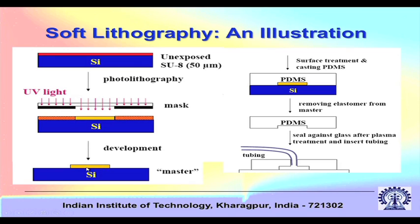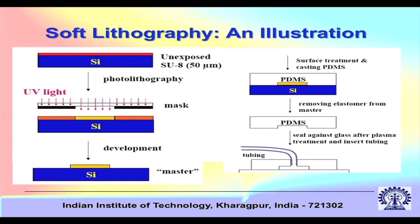You have a master pattern — a silicon structure with photoresist — and cast PDMS on top of it. Then you remove the elastomer from the master. The PDMS assumes the shape of the master because the region where the master protrudes is not filled by PDMS. When peeled off, you get a groove shape. You seal it against glass after plasma treatment, insert tubing, and the groove region forms a microfluidic channel. This is a very simple, day-to-day process in our lab for making microfluidic channels for biological applications.